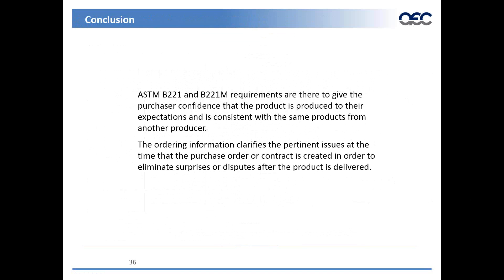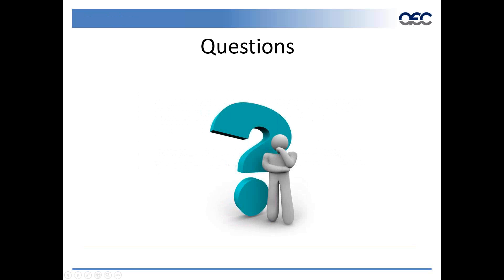In conclusion, B221 and B221M requirements are there to give the purchaser confidence that the product is produced to their expectations and is consistent with the same products from another producer. The ordering information clarifies the pertinent issues at the time the purchase order or contract is created in order to eliminate surprises or disputes after the product is delivered.